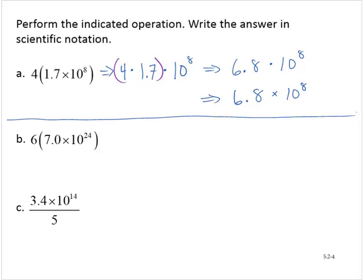Exercise B, we have 6 times 7 times 10 to the 24th. So again, that's 6 times 7.0 times 10 to the 24th. And again, I'll group together the 6 times 7. Now, 6 times 7 is 42. So then that's 42 times 10 to the 24th.